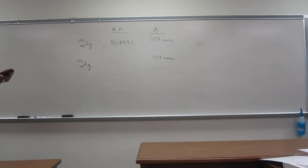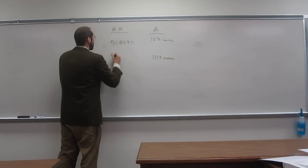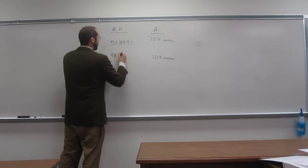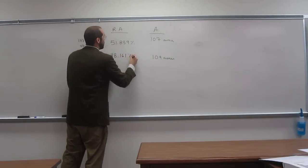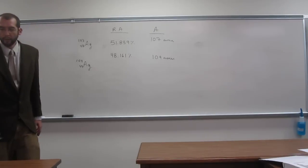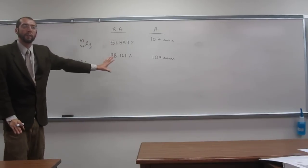And then the relative abundance, how do we figure this out? Let's say 100 minus 51.839, and that's 48.161 percent. So everybody's cool with doing all of that?